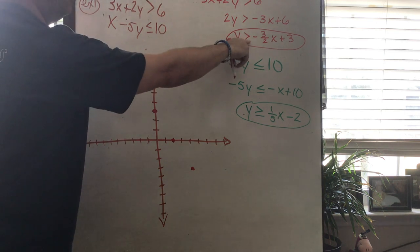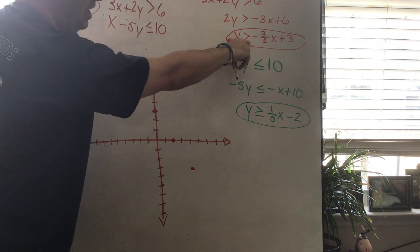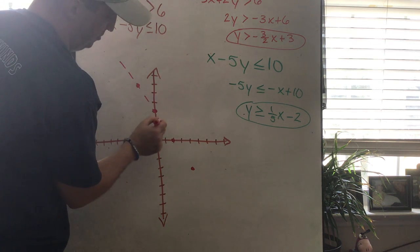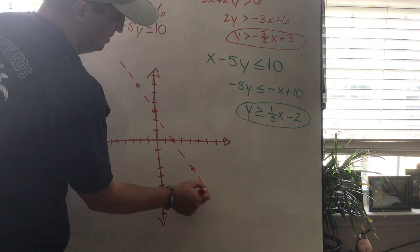This line, because we have just greater than and not greater than or equal to, is gonna be a dotted line, dashed. So we dash it right on through our little coordinate grid like this.